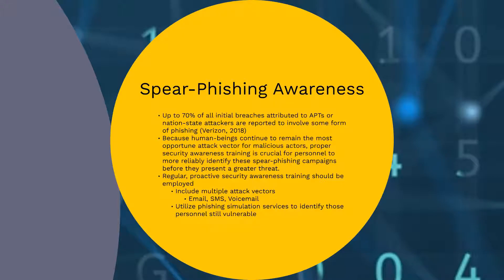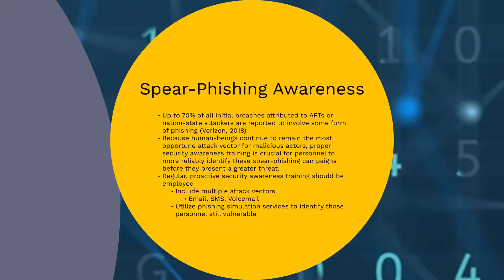It's reported that 70% of APT attacks are initiated by spear phishing techniques typically delivered via malicious emails. Therefore, security awareness training is crucial. Regular, proactive security awareness training designed to help personnel more reliably detect and report phishing attacks should be employed and include multiple attack vectors including email, SMS, and voicemail. Phishing simulation services can also be used to identify personnel still vulnerable to phishing campaigns who may require additional training.